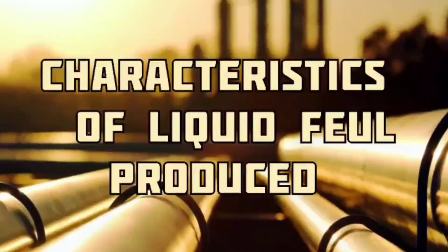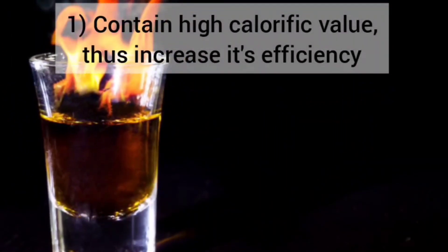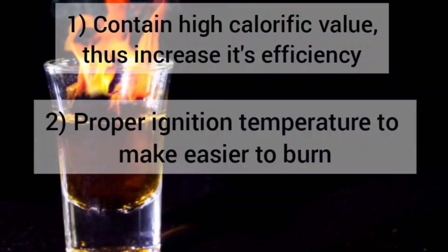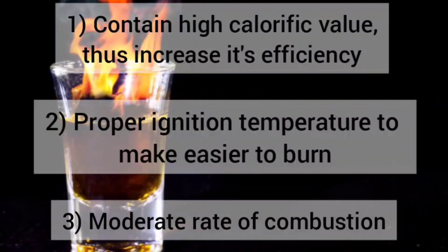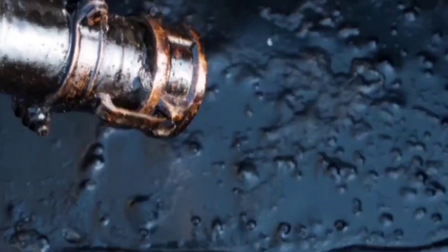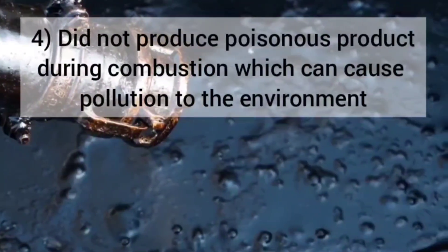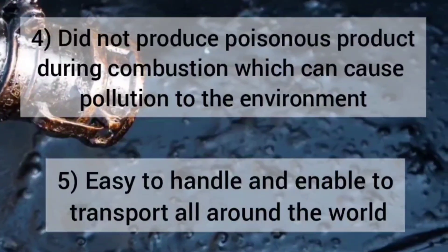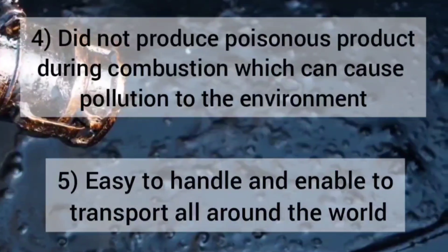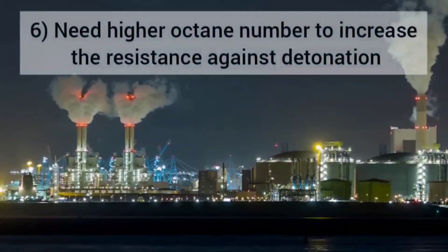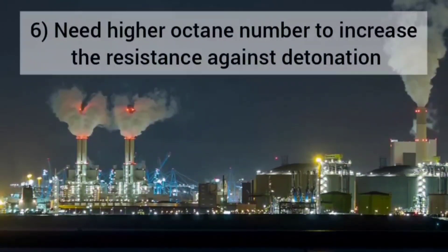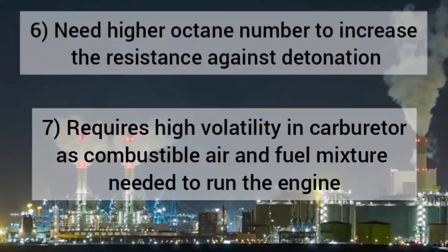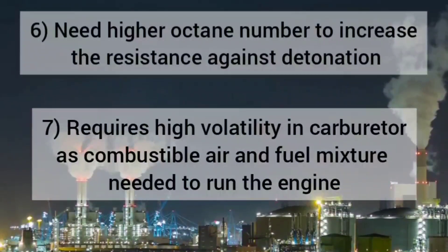Characteristics of liquid fuel produced: First, it contains high calorific value that increases efficiency. Next, it has a proper ignition temperature, making it easier to burn, and a moderate rate of combustion. Liquid fuel does not produce poisonous products during combustion, avoiding environmental pollution. It is easy to handle and transport. It needs a higher octane number to increase resistance against detonation. Lastly, it requires high volatility in the carburetor as combustible air and fuel mixture is needed to run the engine.